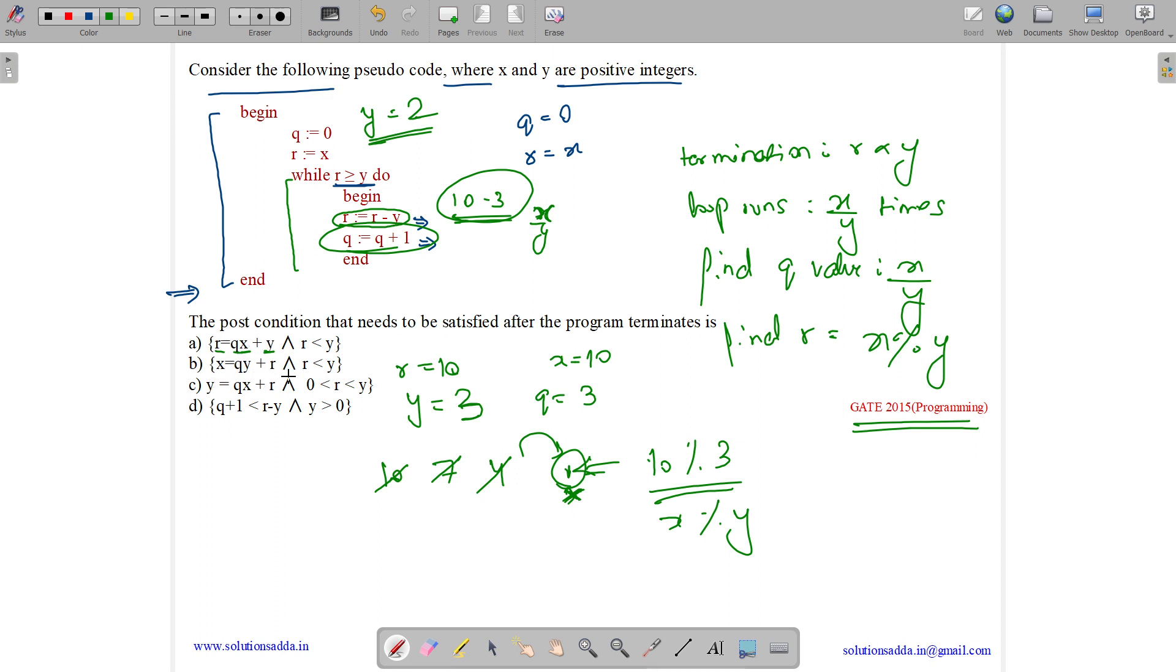x equals to qy plus r. So x is 10, q is 3, y is 3, 3 into 3 is 9, and r is 1.